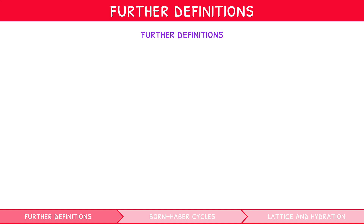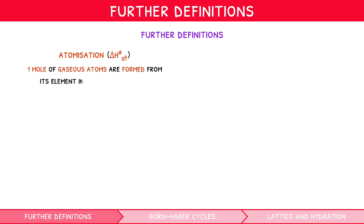The first is enthalpy of atomisation: the enthalpy change when one mole of gaseous atoms are formed from its element in its standard state. It is endothermic. For example, Li(s) → Li(g), or 0.5Cl₂(g) → Cl(g).